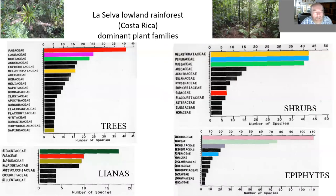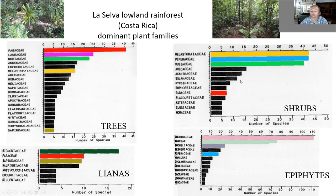Now a quick look at some of the dominant families for different growth forms. In lowland forests in Costa Rica — La Selva — trees are dominated by Fabaceae, Lauraceae, Rubiaceae, and so on. Shrubs are dominated by Melastomataceae, Piperaceae, and Rubiaceae, with also Fabaceae in a minor capacity.